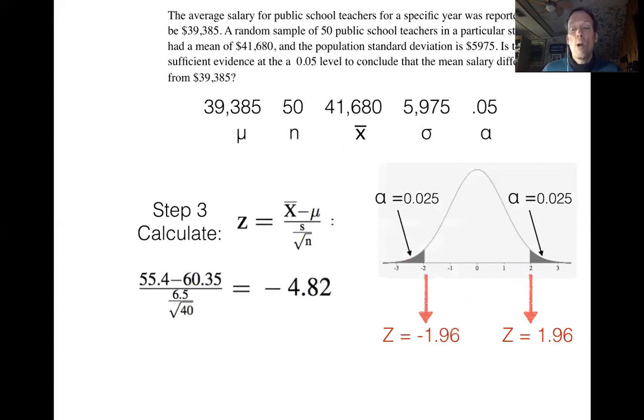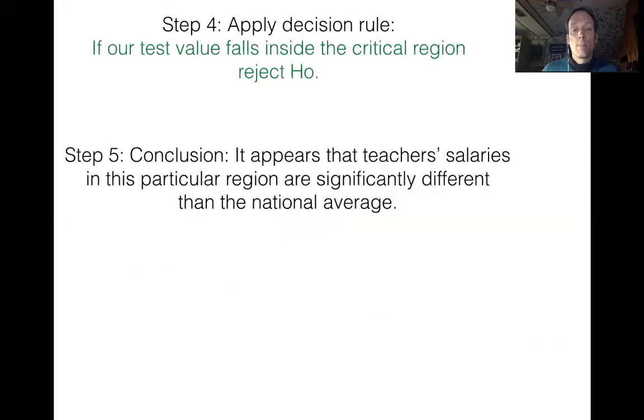So now it's time to think about the next step. When we do step four, we apply the decision rule. And the decision rule says, again, if we see that we have the test value in the critical region, we're going to reject HO. So our conclusion is going to be, it appears that teachers' salaries in this particular region are actually different than the national average.